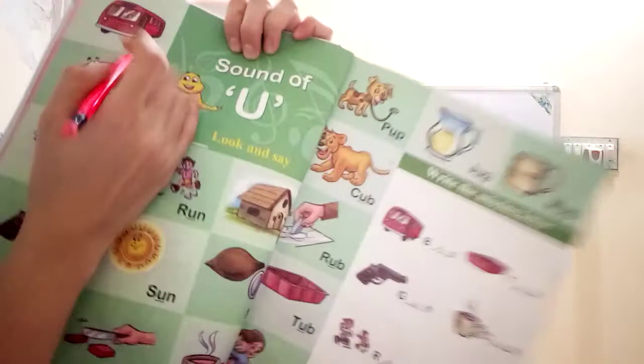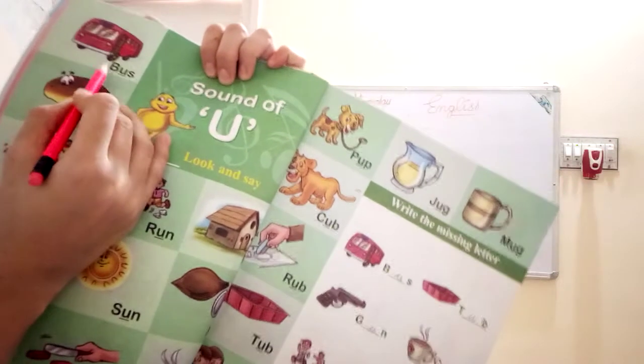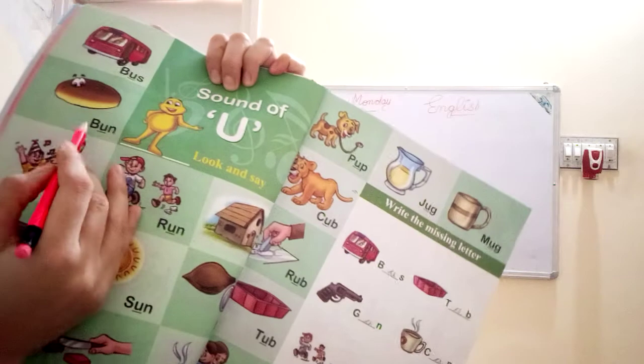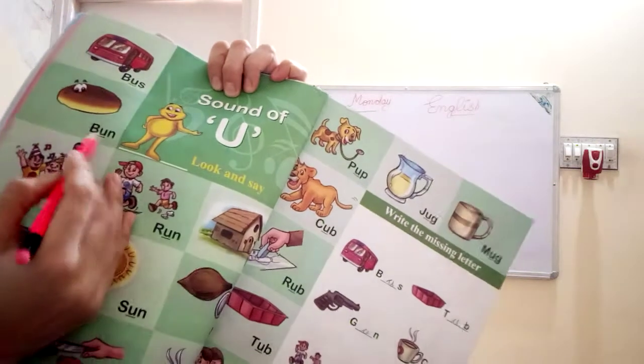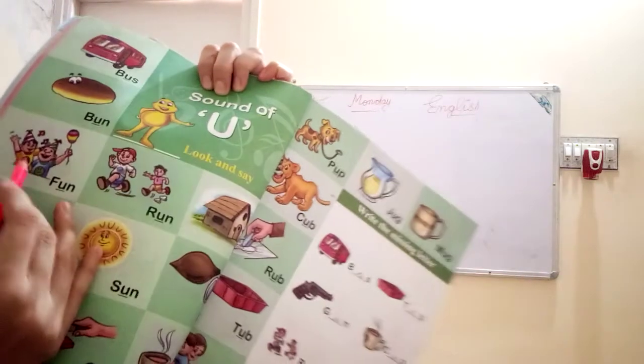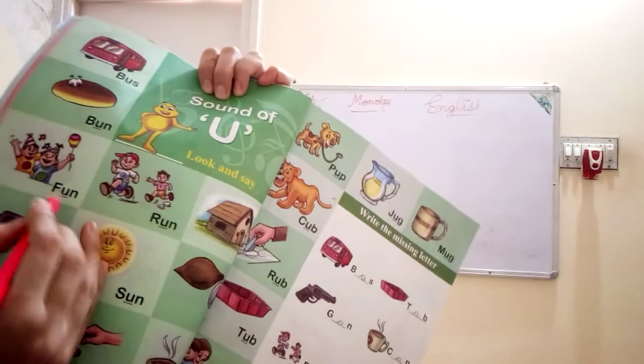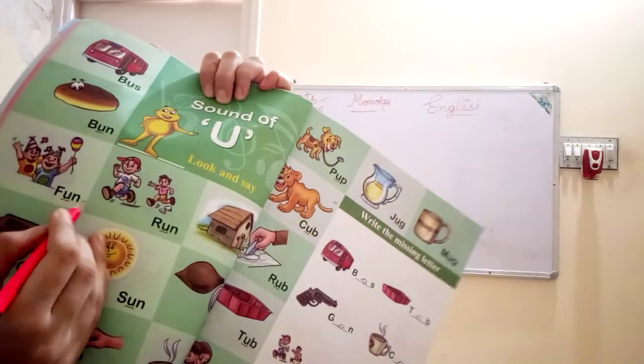Repeat with me. Bus. Bus ki spelling kya hoti hai? B.U.S. Bus. Next. Bun hai na? To bun ki spelling kya hoti hai? B.U.N. Bun. Next. Fun. Fun ki spelling kya hogi? F.U.N. Fun.